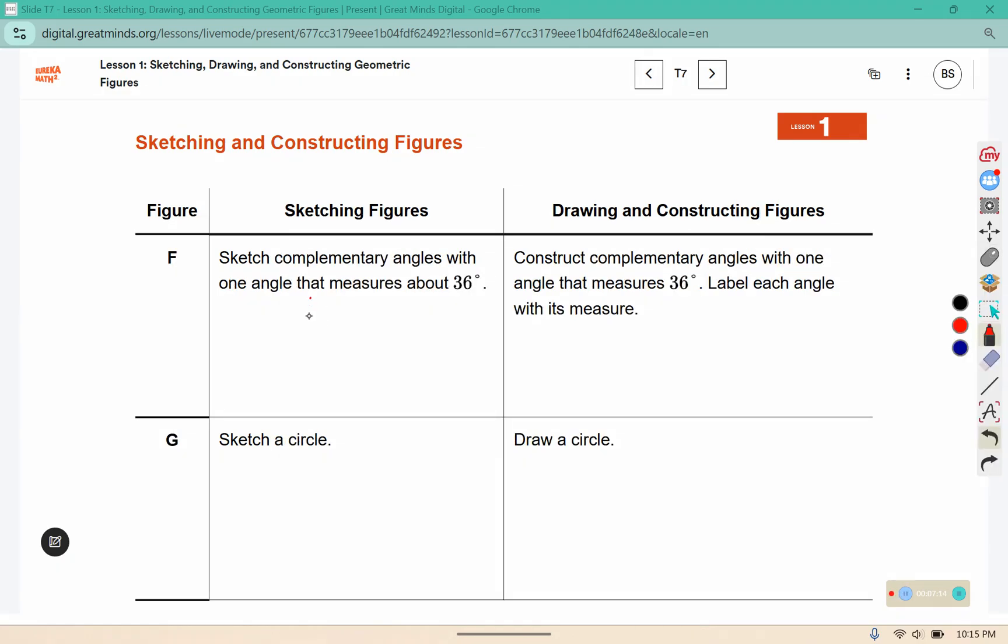Complementary angles are 90 degree angles, and one of them would be 36. 90 minus 36, 10 minus 6 is 4, 8 minus 3 is 5, means this one has to be 54 degrees.